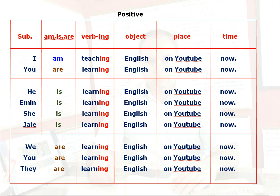The present continuous tense indicates continuing action — something going on now. This tense is formed with the helping verbs am, is, are, and the main verb of the sentence with the ending -ing. After this comes the object of the sentence, followed by place and time adverbs.